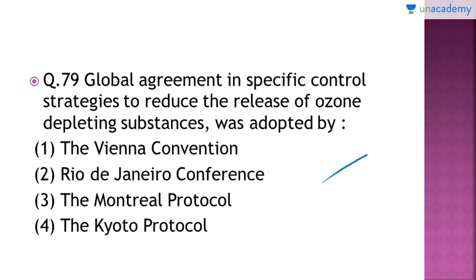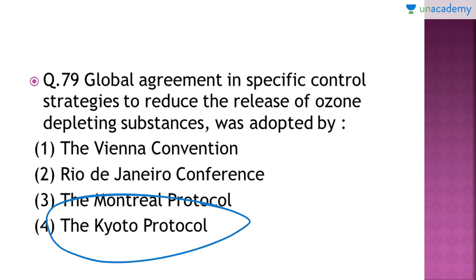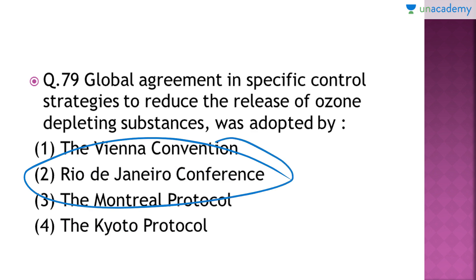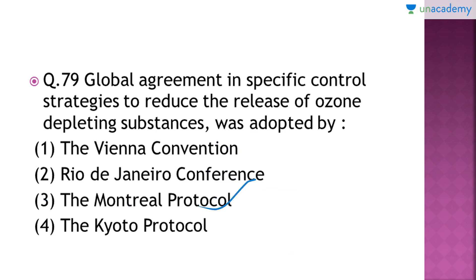The Vienna Convention was an international treaty defining a framework of diplomatic relations between independent countries, so it has nothing to do with the ozone layer. The Rio de Janeiro conference was the Earth Summit based on sustainable development. The Kyoto Protocol extends the UN framework convention on climate change. Only the Montreal Protocol and some content about Rio de Janeiro are important in your NCERT.